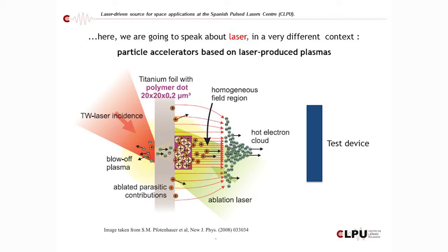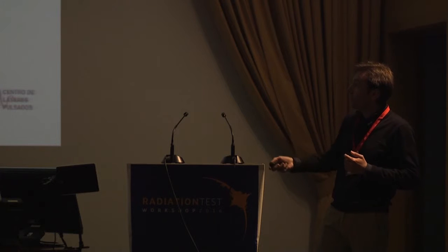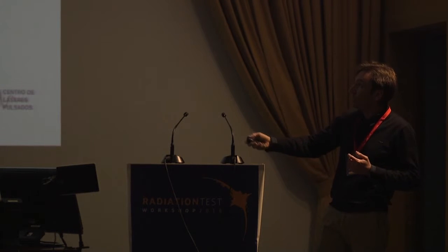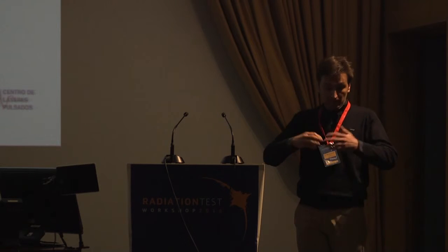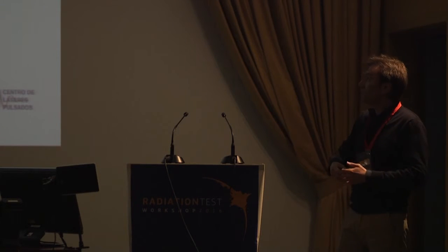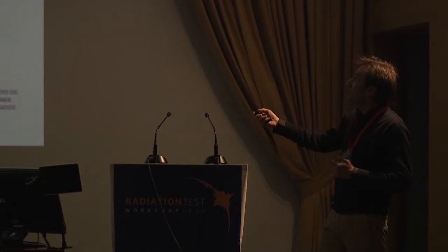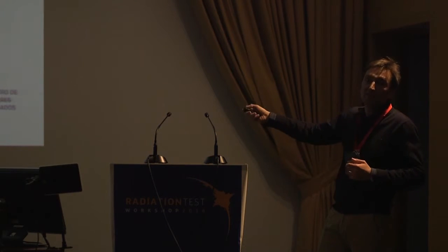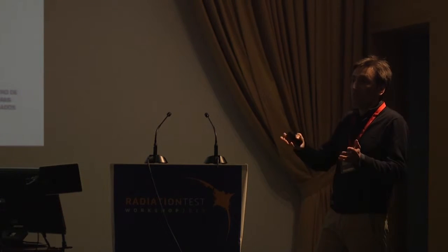This talk is about particle acceleration based on laser-produced plasma. The idea is to focus the laser not on the test device but on a material we call the target, and there we produce a particle beam — electron beams, photon beams, proton and ion beams, neutrons. There are many species of particles produced that may be used for testing electronics in this community.